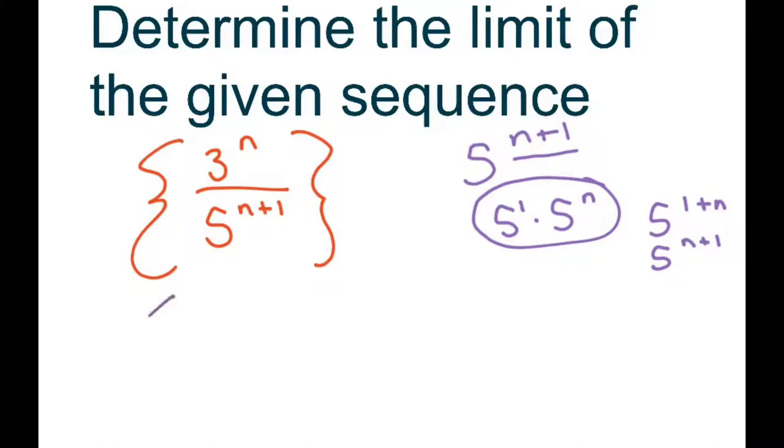So in a way, I could rewrite this as 3 to the n over 5 times 5 to the n. So I hope that helps, and we'll get started.